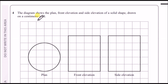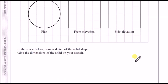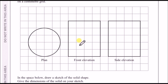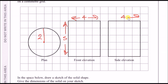Number four: the diagram shows the plan, front elevation, and side elevation of a solid shape drawn on a centimetre grid. We need to draw a 3D sketch of the solid shape. First, label the dimensions: a height of 5, a width of 4 for both front and side views, and the radius of the circle is 2.